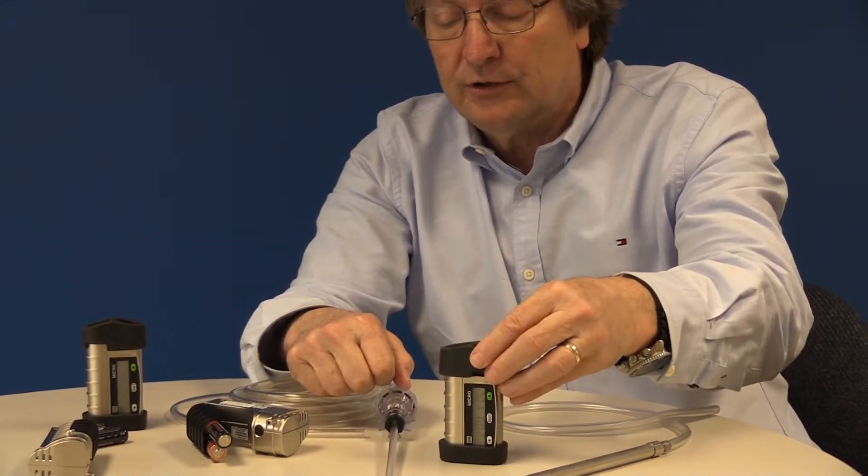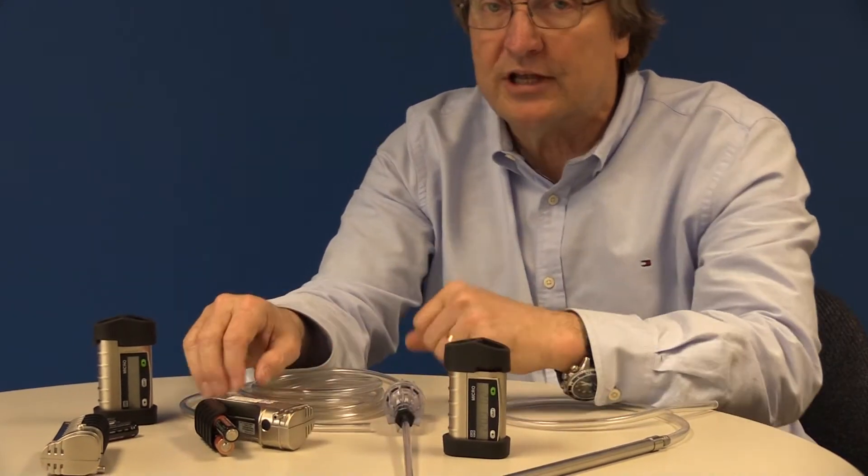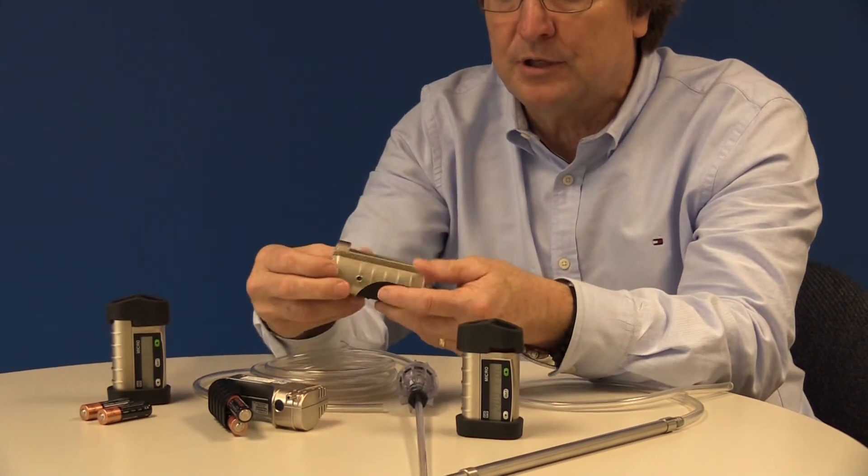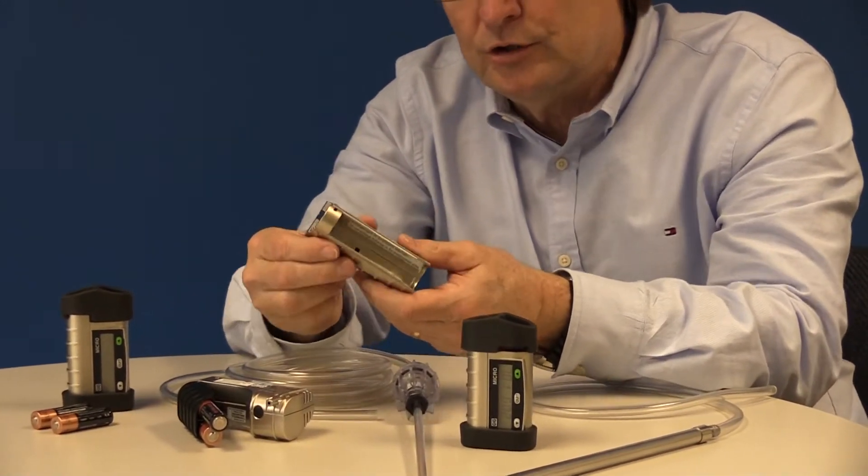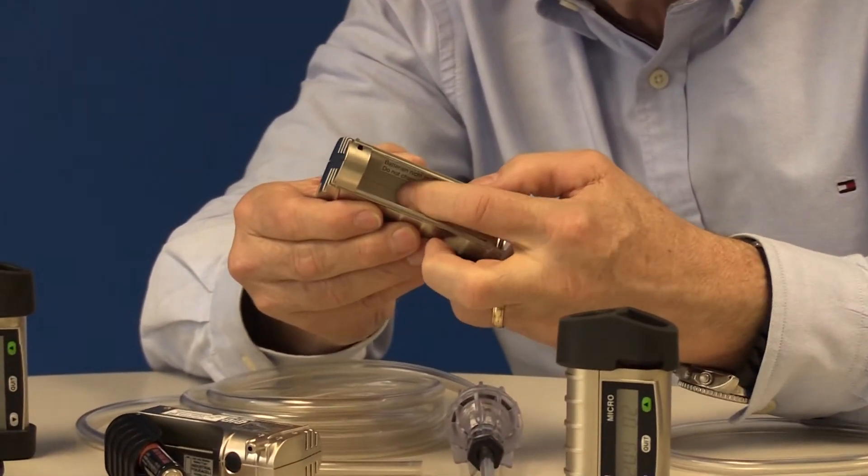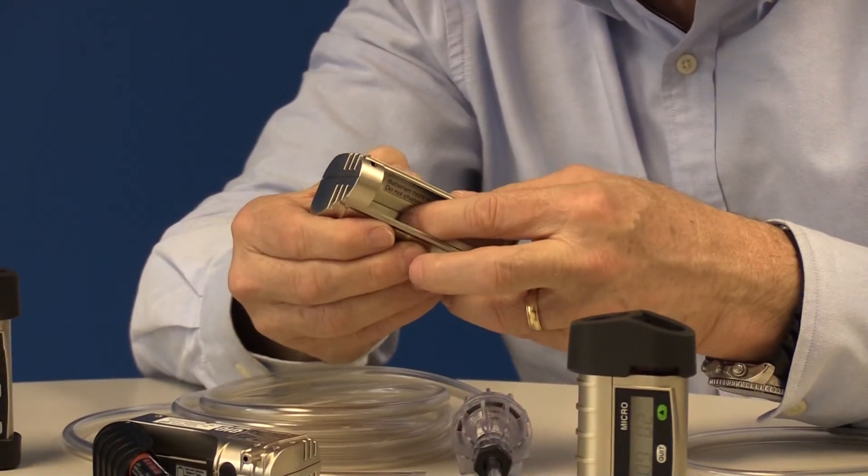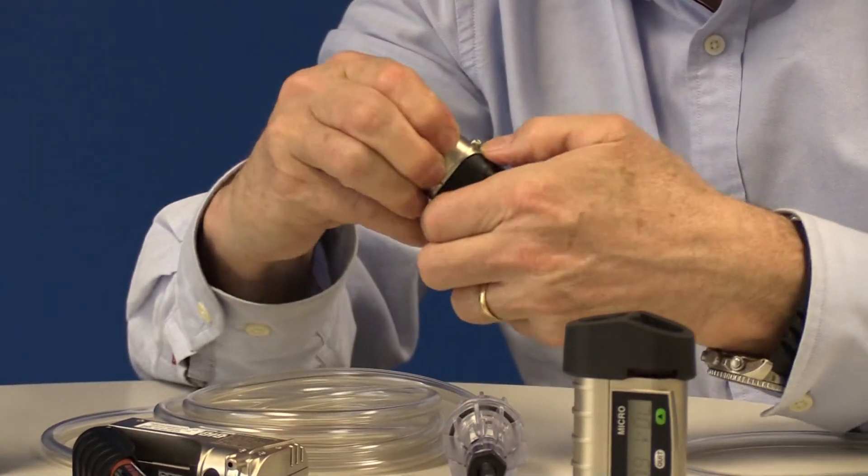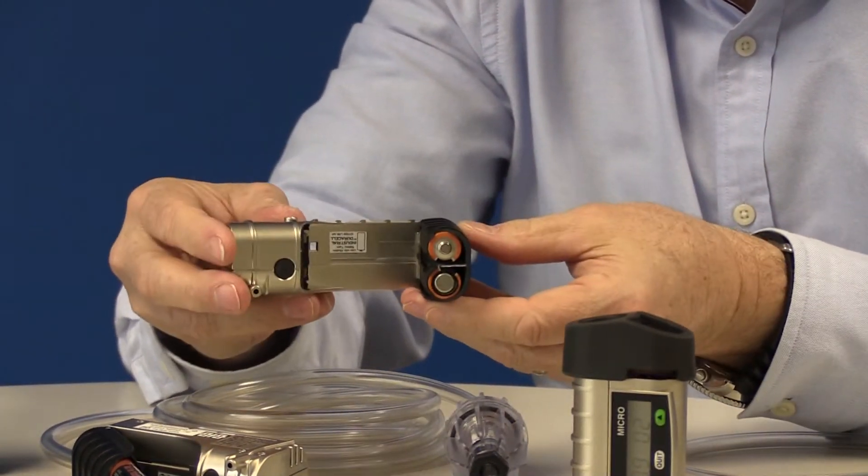The first thing you'll need to do is to make sure you have a set of batteries in the pump. And to open the protective pump compartment cover, you'll notice on the inside of the pump there is a catch. You push the catch to release the pump cover and open the battery compartment.